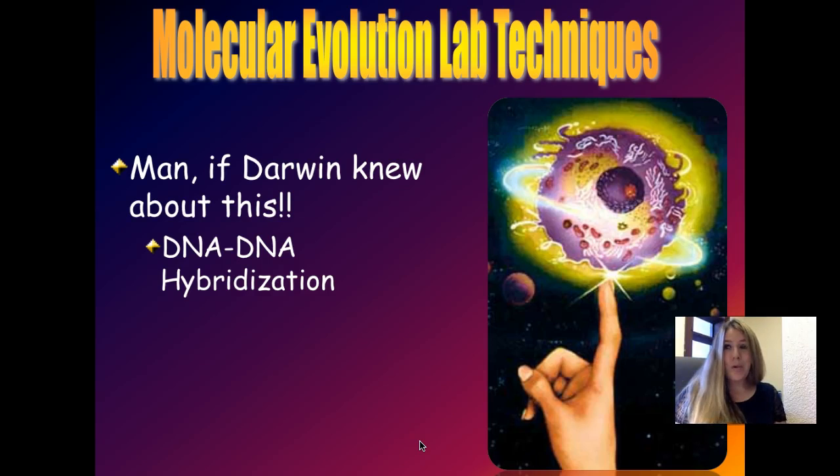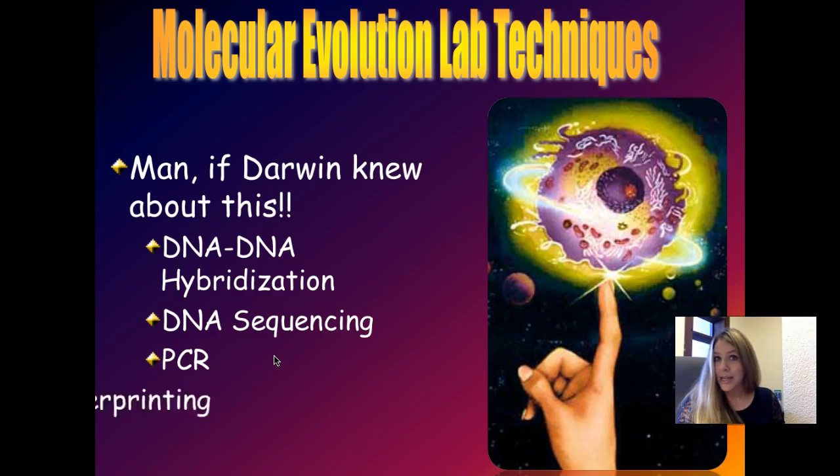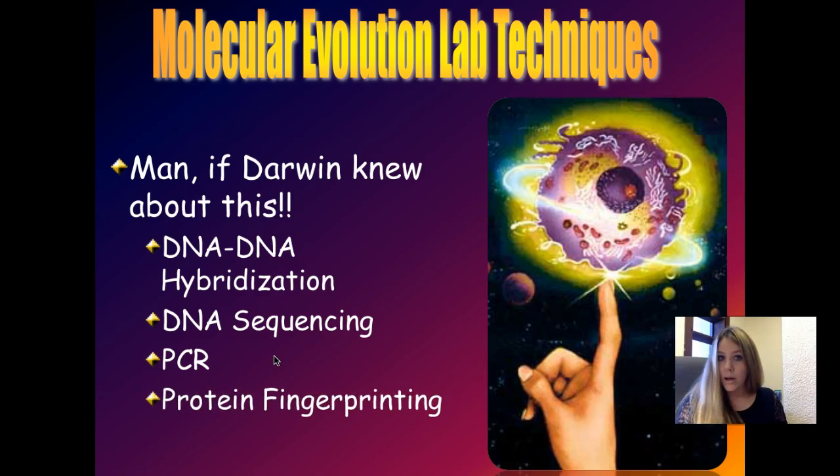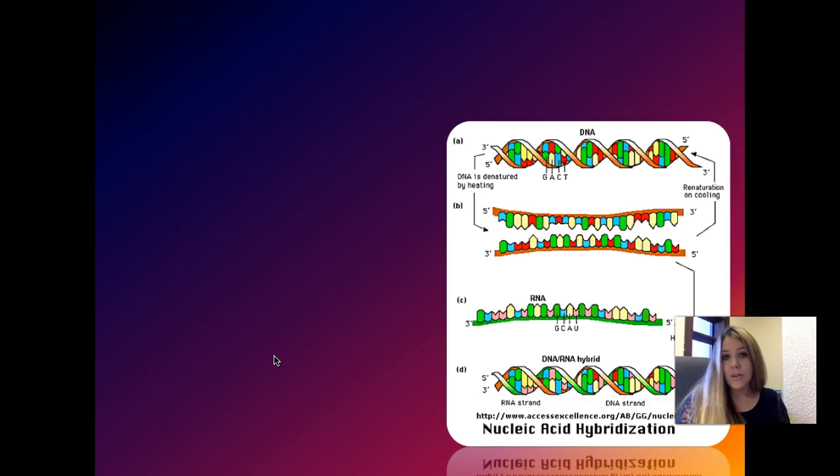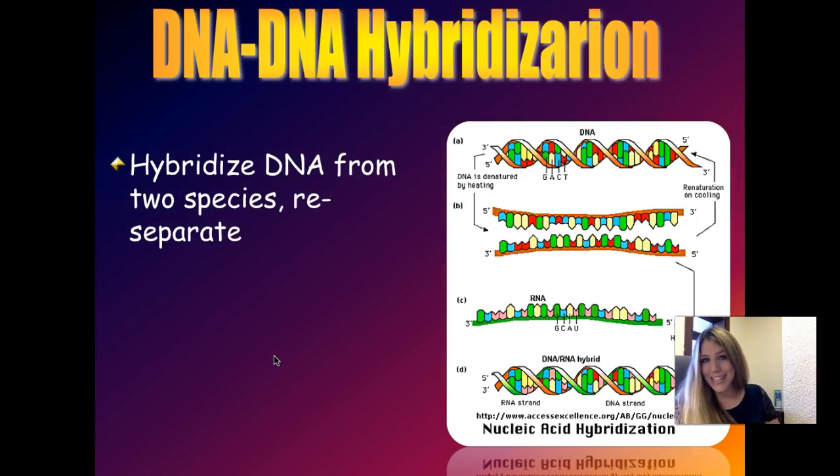So many things we can do now with molecular evidence with biotechnology. And man, if Darwin knew about this, he'd just be giddy, because he didn't even know about DNA. It hadn't been discovered for a long time after he lived. Yet he was smart enough to kind of pick up on how change over time could happen. But for example, let's take DNA-DNA hybridization. Now we're able to actually take DNA and sequence it and get the actual base sequence. We can make billions of copies of a particular gene using a technique called PCR and run electrophoresis gels. That's called fingerprinting. We can do it with DNA. We could also do protein fingerprinting.